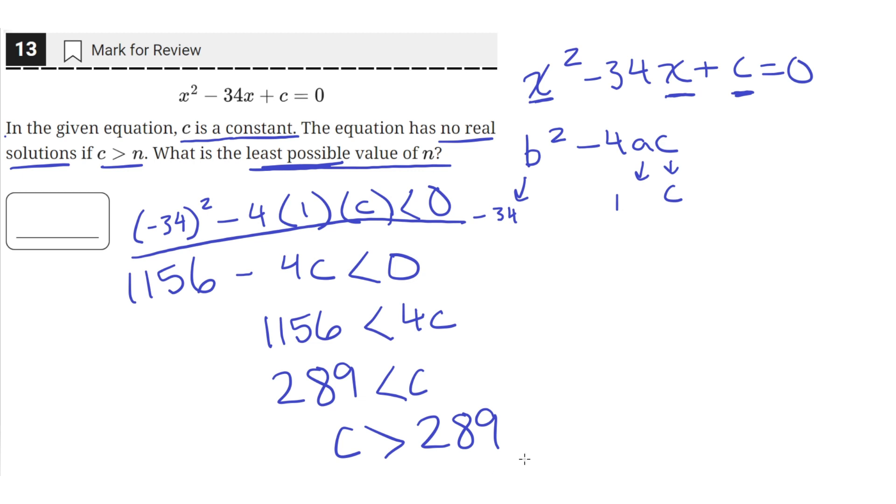So c has to be greater than 289 in order for the equation to have no real solution. So that means in the inequality c must be greater than n, n is equal to 289. So the least possible value of n is 289.